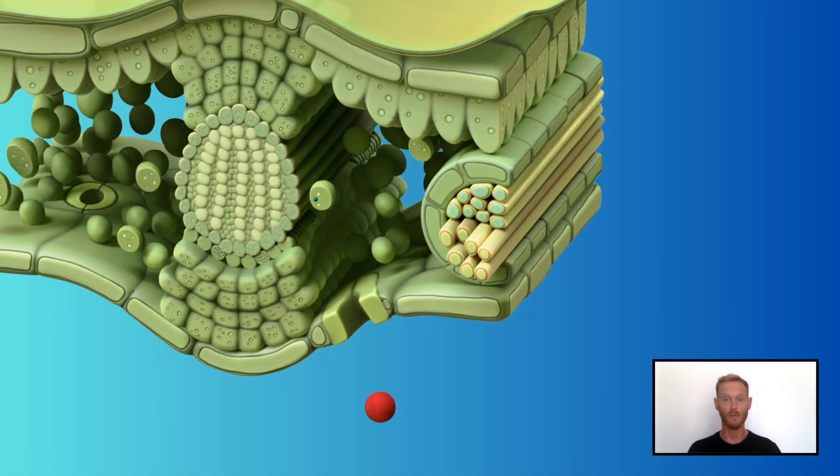Carbon dioxide, needed for photosynthesis, diffuses from the airspaces and into the cells down a concentration gradient, while the oxygen released as a by-product moves in the other direction.